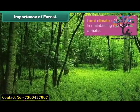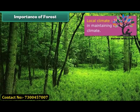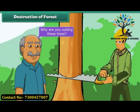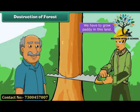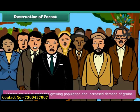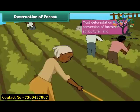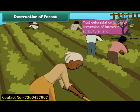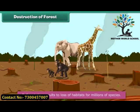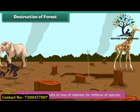Forests help maintain the carbon dioxide level, boosting plant growth, and help maintain the local climate to fight climate change. When Shyam, Ram, and their uncle reached the other end of the forest, they saw people cutting trees to grow crops. Due to growing population and increased demand for grains, forests are being transformed into cultivation land. Countless tree-cutting from logging operations leads to more destruction, and the most severe impact of deforestation is the loss of habitats for millions of species.